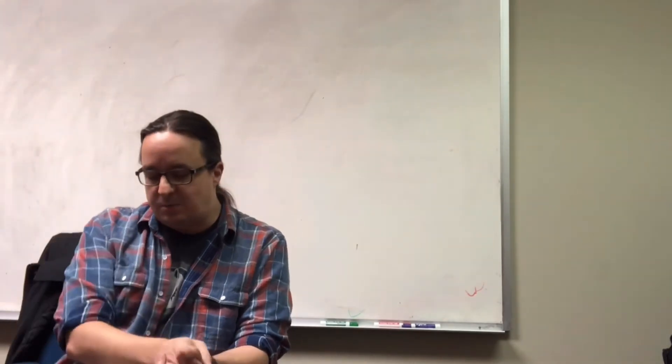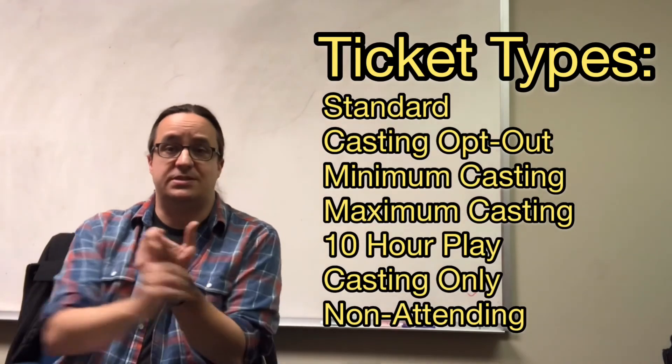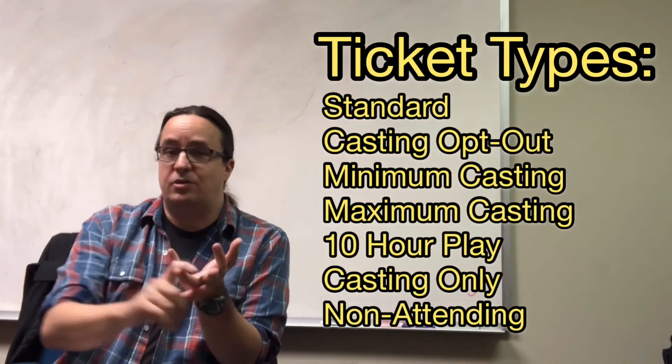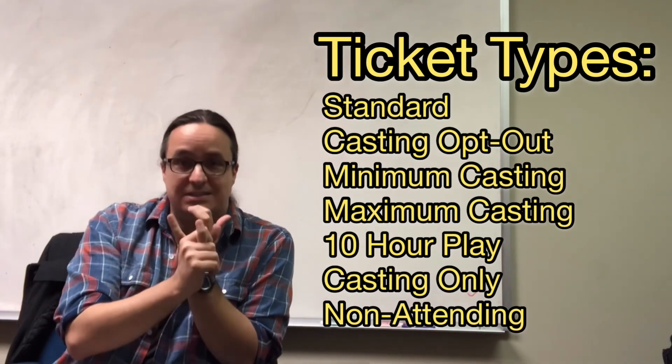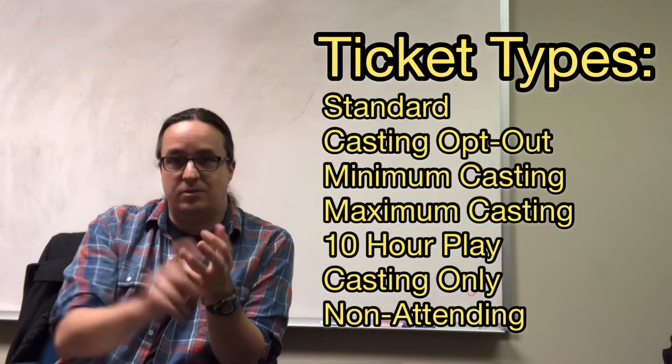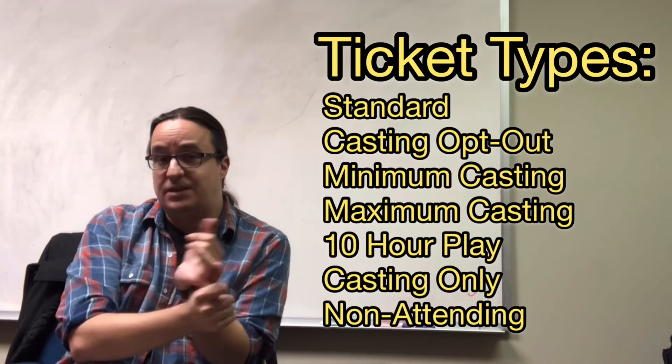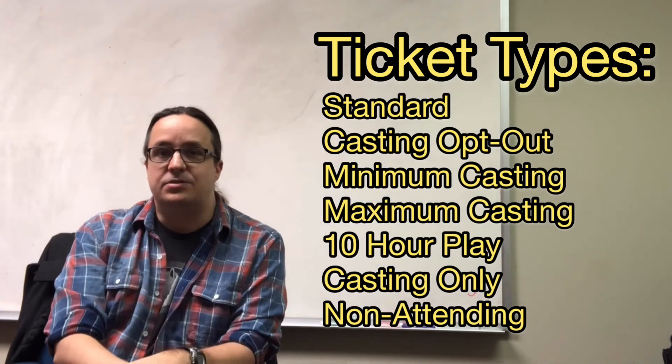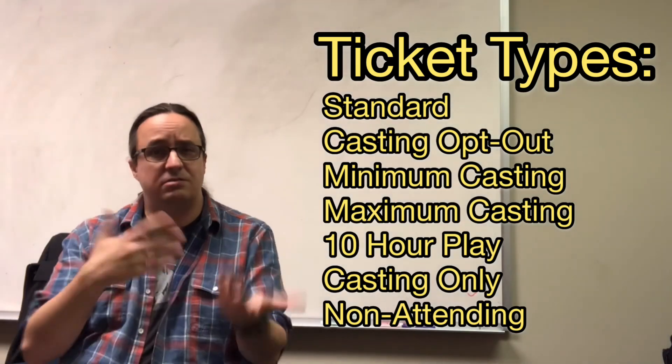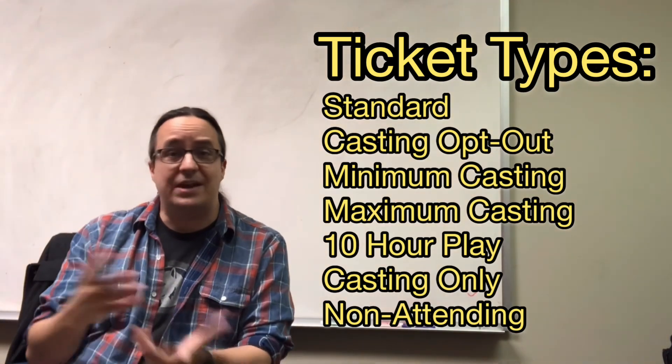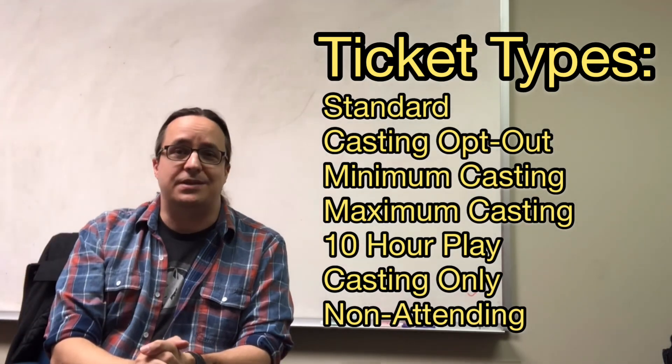I just wanted to take the opportunity to go over the ticket types that are available. So there's the standard, your full opt-out, your minimum casting, your maximum casting, your 10 hours of play with either two hours of casting on the front or the back, and then casting only or a non-attending ticket. Thanks so much for listening, and if there's stuff that's unclear about what I just shared, feel free to ask me in a comment and I'll clear it up as best I can. Thanks.